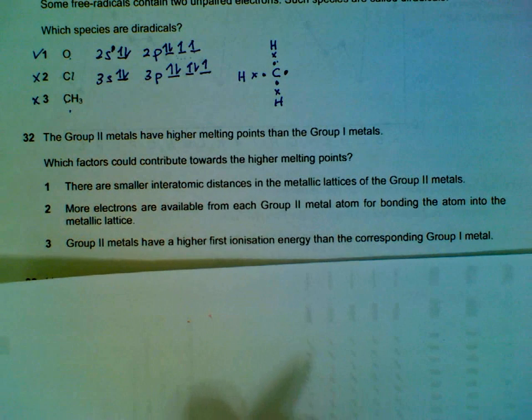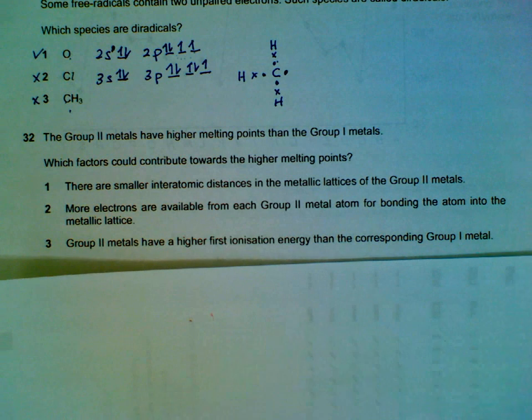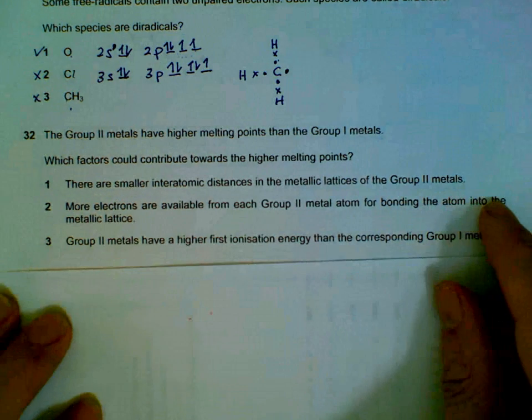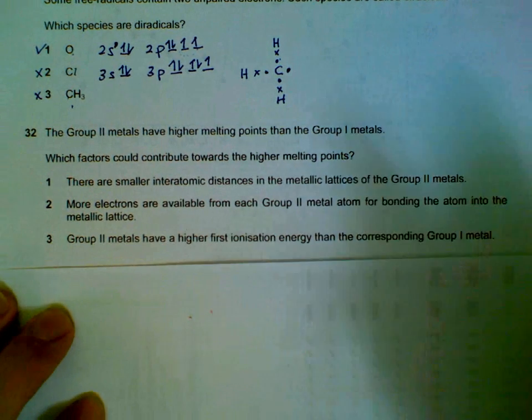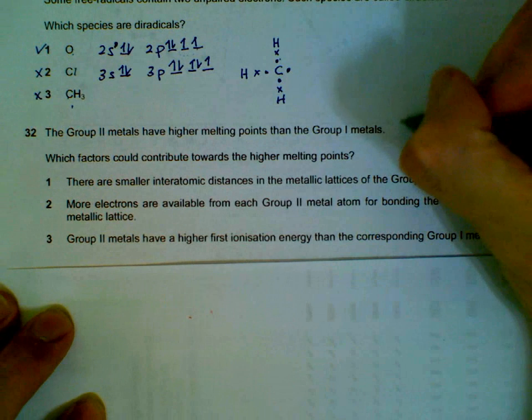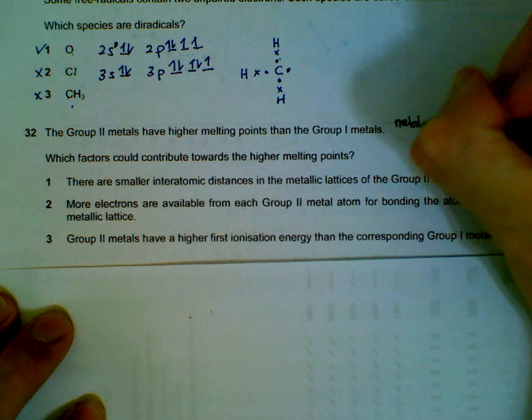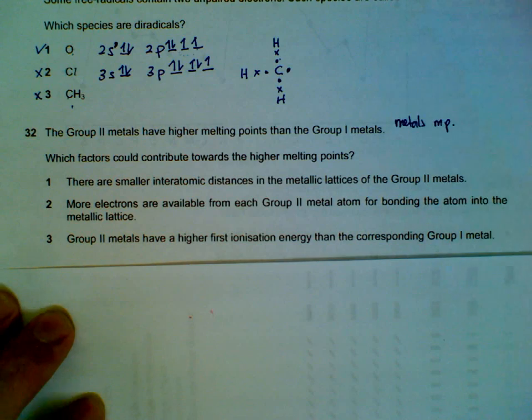Question 32: Group 2 metals have higher melting point than group 1 metals. What factors will contribute to the higher melting point? The general idea is, for metals, melting point...